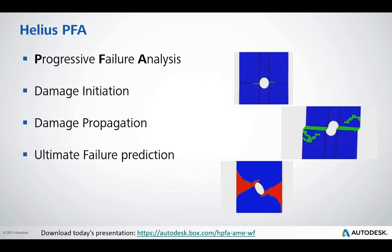Let's get started talking about Helios PFA. One of the biggest engineering challenges of our time is how to create products that are lighter, faster, and stronger. A technological revolution helping to realize this is composite materials. Examples of the benefits of composites are seen in the automotive, aerospace, marine, and sporting goods industries. Autodesk Helios PFA, which stands for Progressive Failure Analysis, uses the power of finite element analysis to provide deeper insight into the behavior of composite structures. Helios PFA is used to predict damage initiation, damage propagation, and ultimate failure. This exceptional accuracy will help you realize the benefits of the composite material revolution.